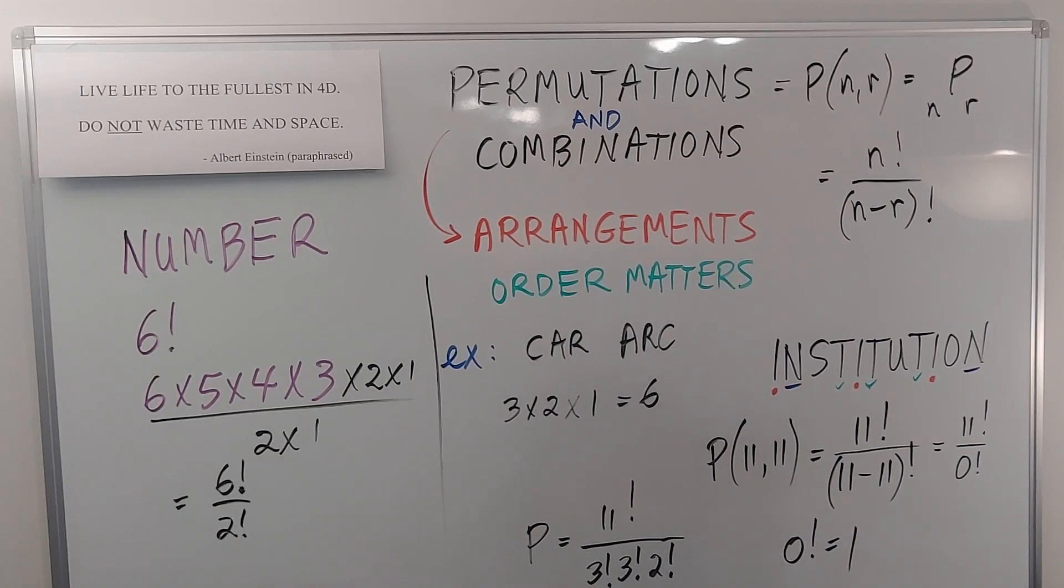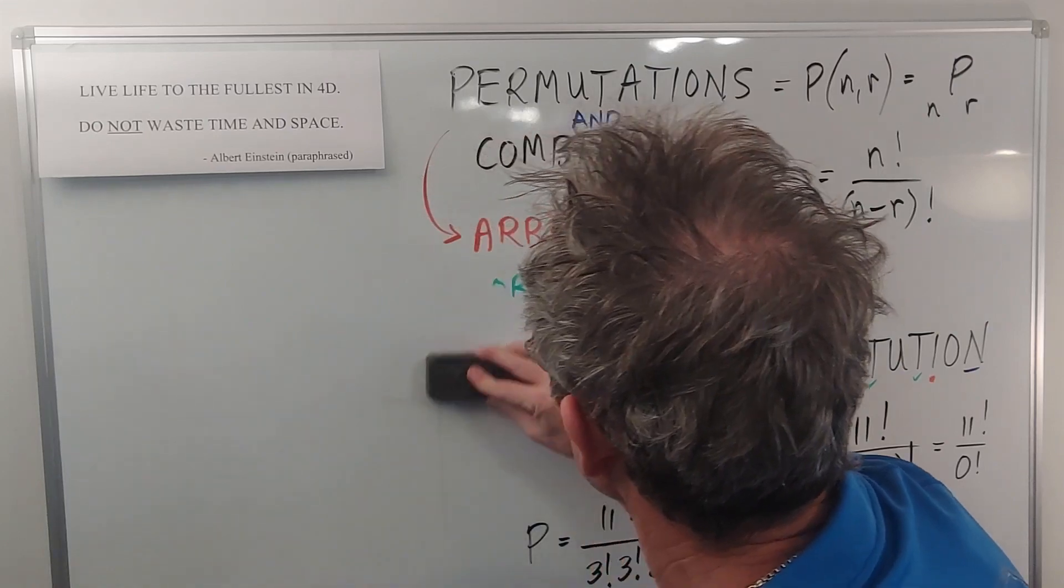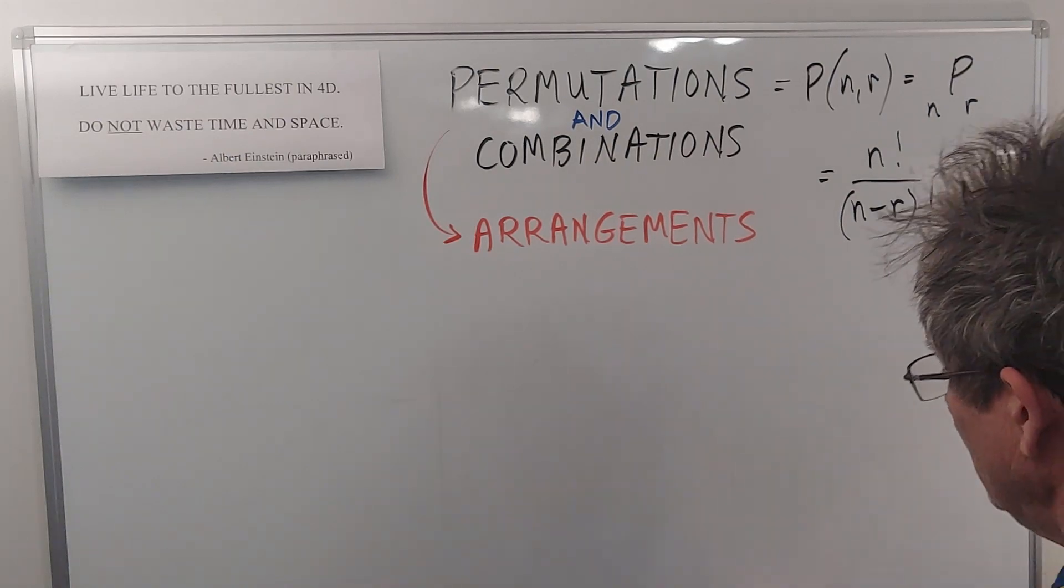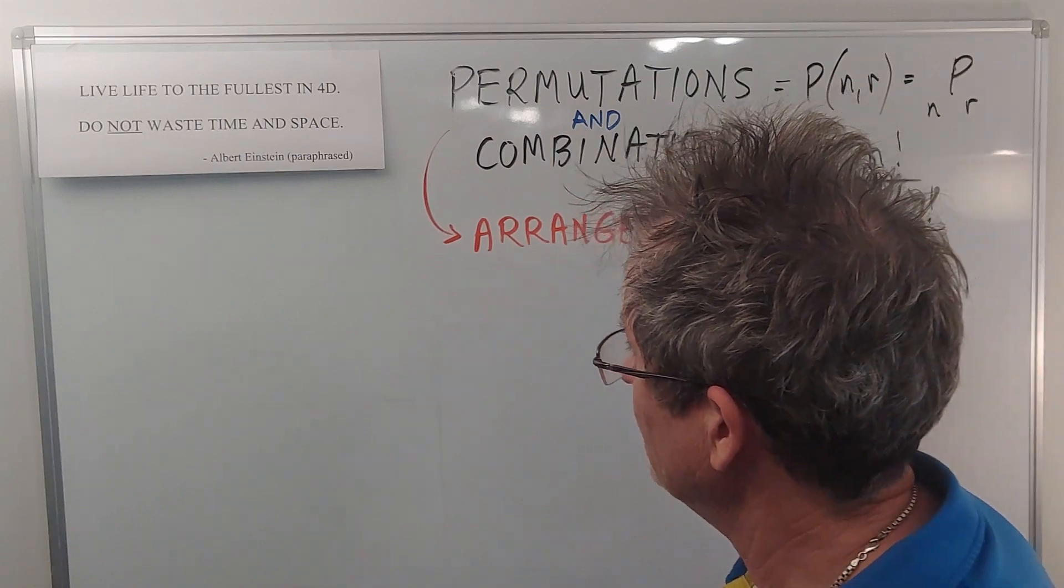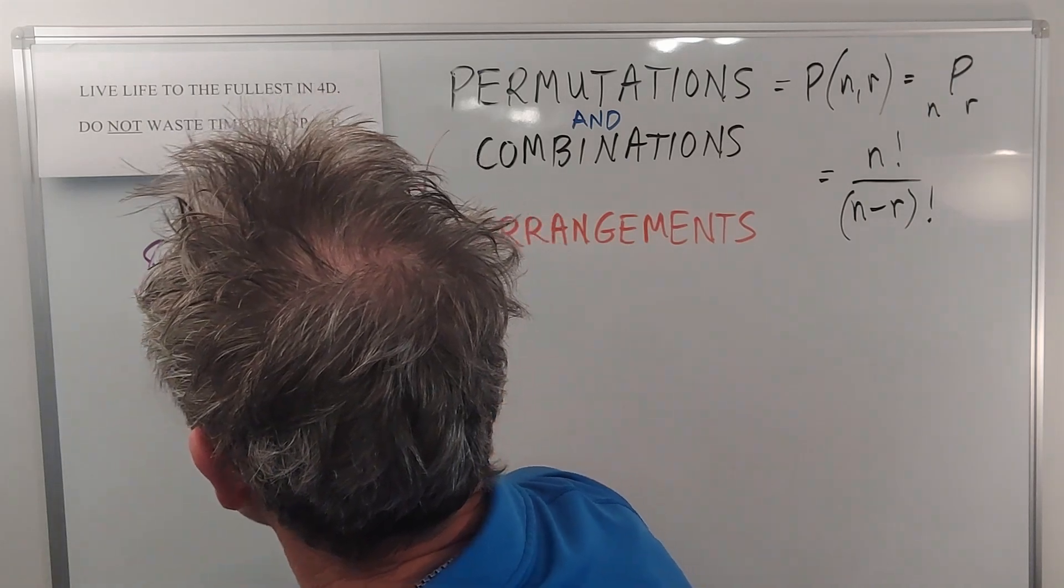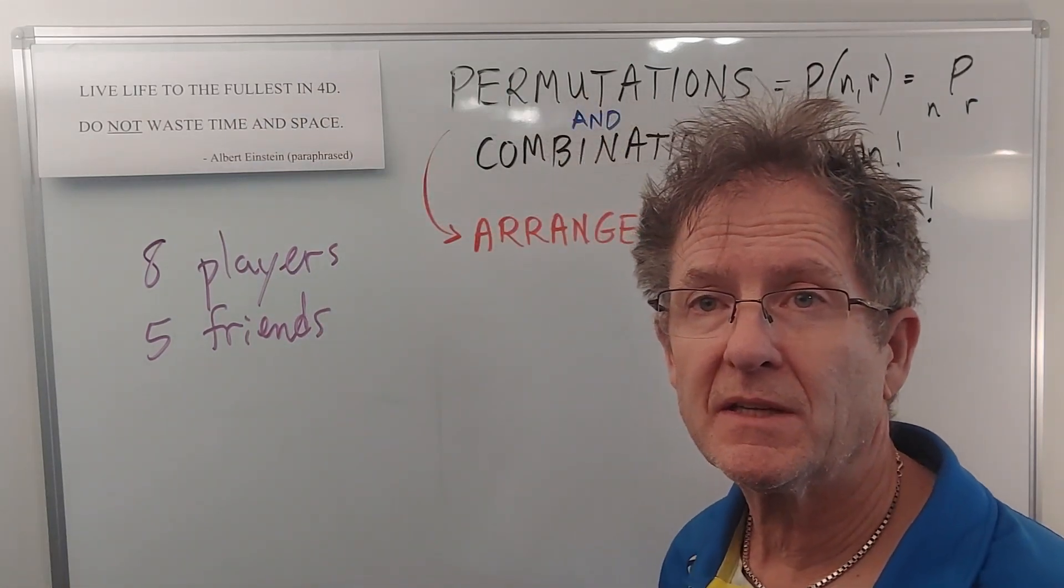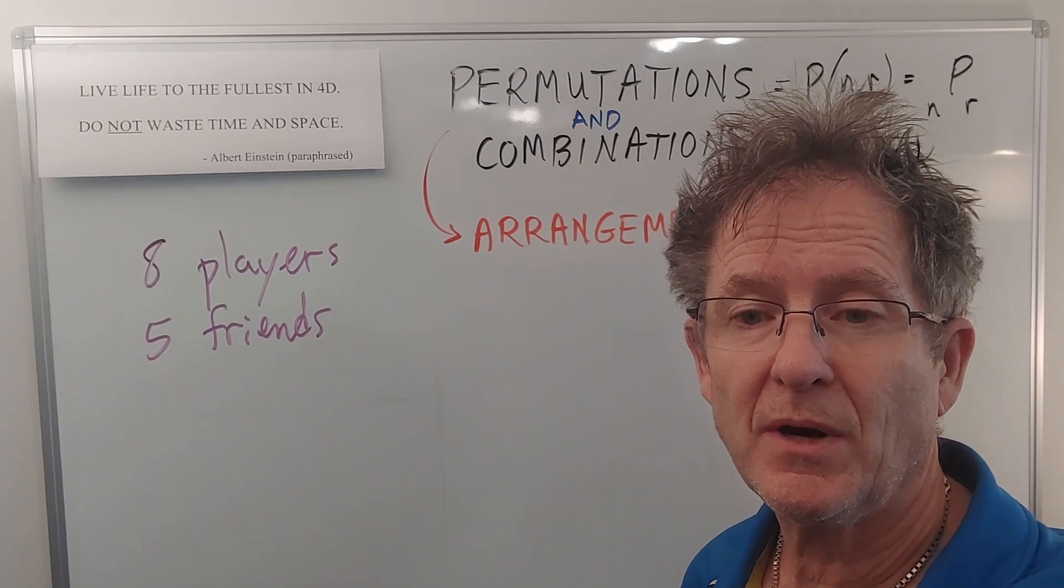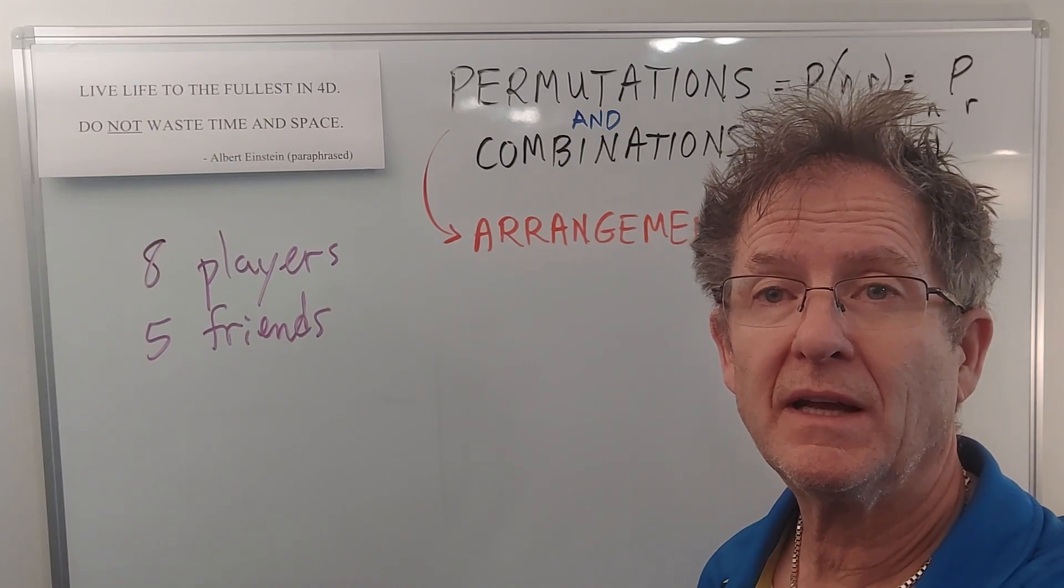And finally, let's consider five friends trying out for the five different positions on the basketball team, out of a total of eight people that are trying out. So you got eight players, five friends who want to be on the team together, trying out for the five different positions, which on the basketball team, as you probably know, are point guard, shooting guard, small forward, power forward, and center.